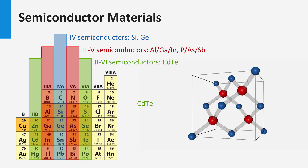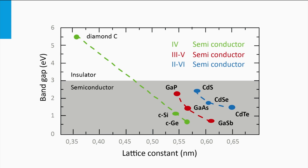Another group of semiconductor materials are the so-called 2-6 semiconductors, like cadmium telluride. A 2-6 semiconductor consists of two elements: one element has two valence electrons and the other has six valence electrons. These materials can also form a diamond cubic crystalline lattice. In the crystalline lattice shown here, the cadmium atoms are blue and the tellurium atoms are red, so every cadmium atom is bonded to four tellurium atoms and every tellurium atom neighbors four cadmium atoms. For 2-6 materials based on cadmium — such as cadmium sulfide, cadmium selenide, and cadmium telluride — the larger the lattice constant, the smaller the band gap will be. Cadmium telluride has the largest lattice constant and therefore the smallest band gap.